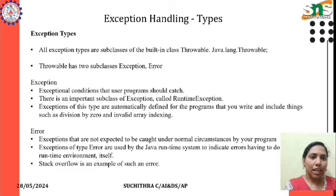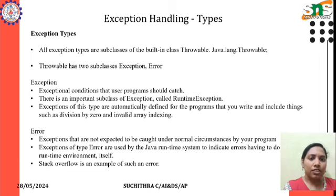All exception types are subclasses of the built-in class Throwable — java.lang.Throwable. Throwable has two subclasses: Exception and Error. Exception represents exceptional conditions that a user program should catch. An important subclass of Exception is RuntimeException, which includes things such as division by zero and invalid array indexing. Error represents exceptions that are not expected to be caught under normal circumstances — these are used by the Java runtime system to indicate errors having to do with the runtime environment itself.